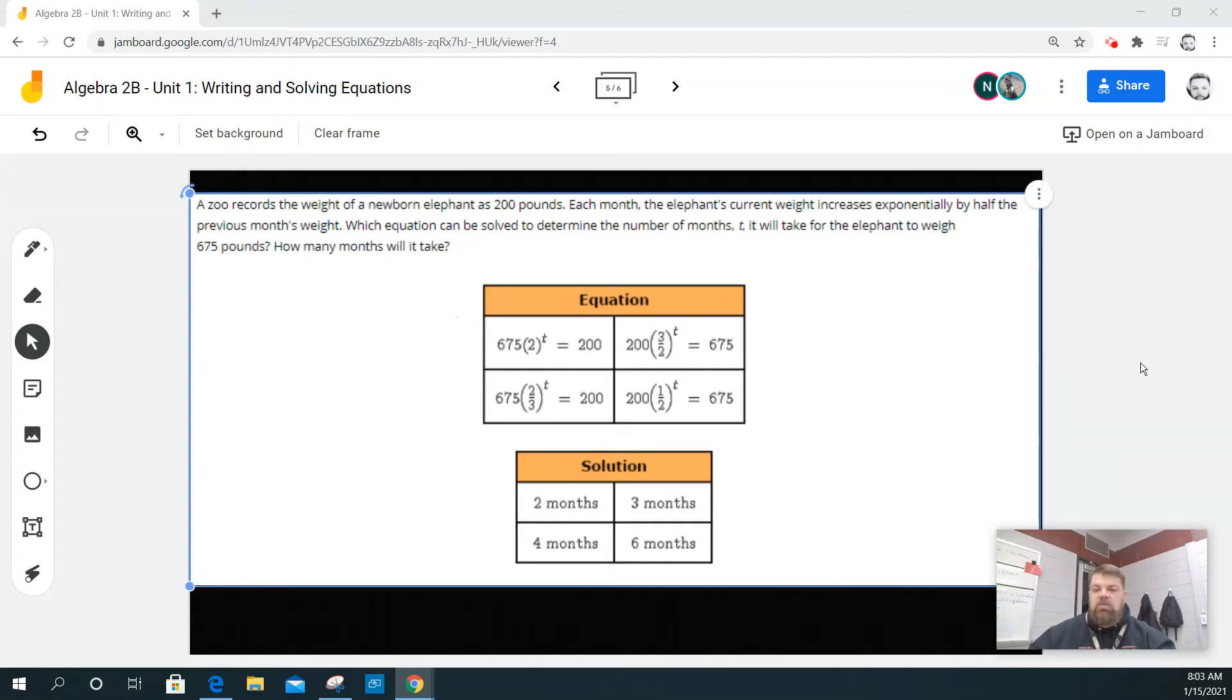All right. So for this question, it says a zoo records the weights of a newborn elephant as 200 pounds. Each month, the elephant's current weight increases exponentially by half of the previous month's weight.